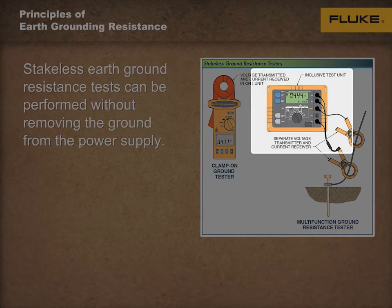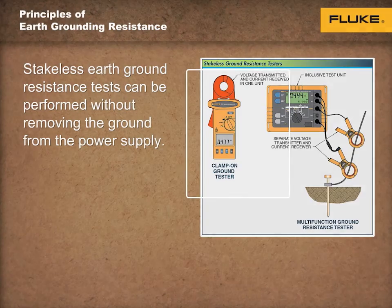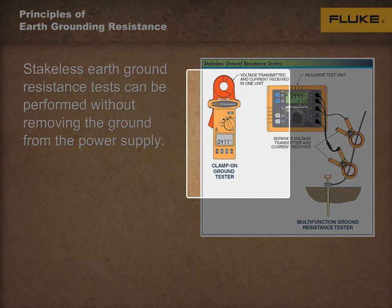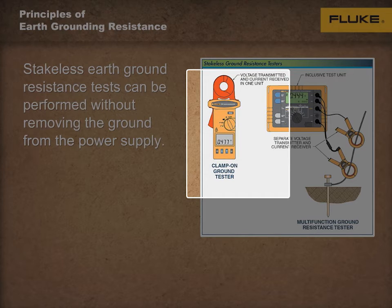Also available are test units that include both transformers in one, such as the ground clamp on the left. The inclusive unit on the left cannot be used to measure earth resistance or perform the 3-pole, 4-pole ground test. However, the inclusive unit can be used as a current clamp to measure current, similar to a standard current clamp, or for the measurement of any leakage current flowing in the grounding system.